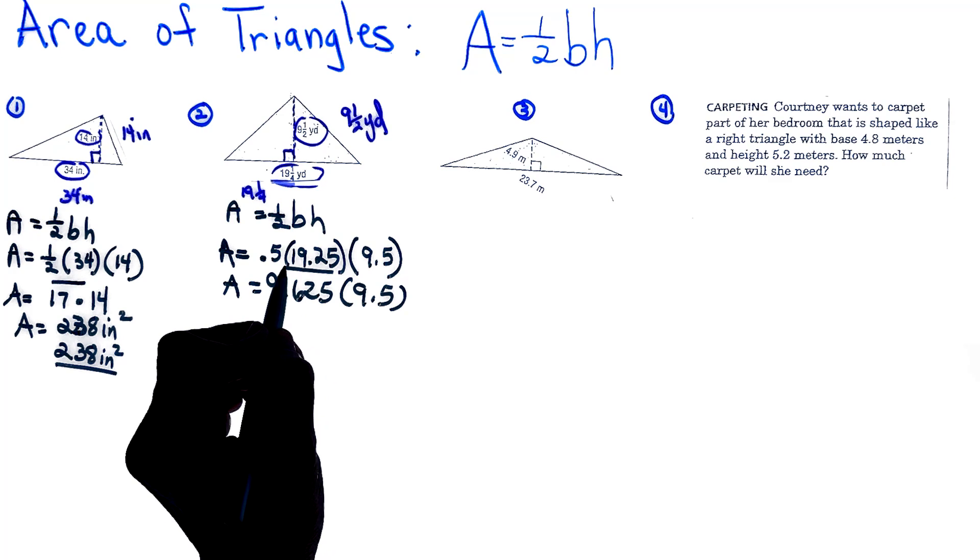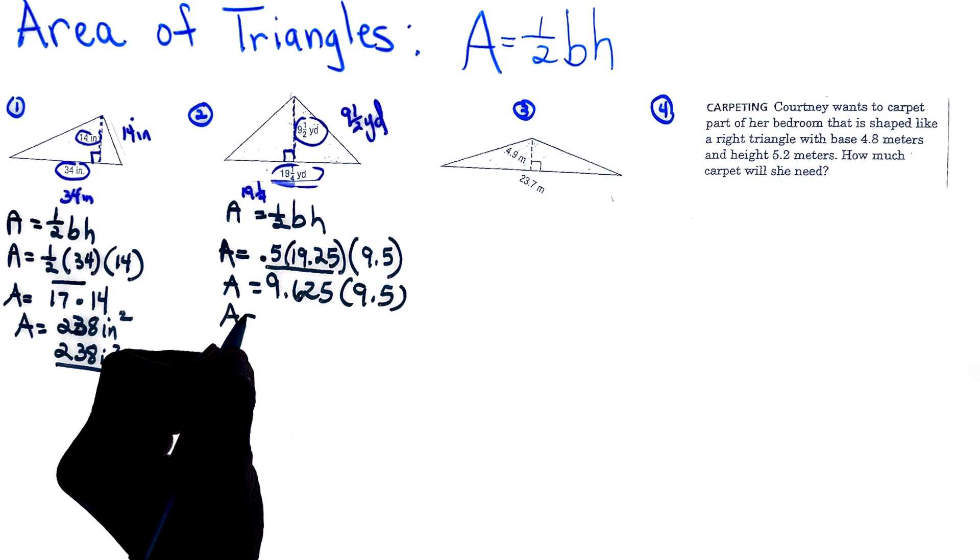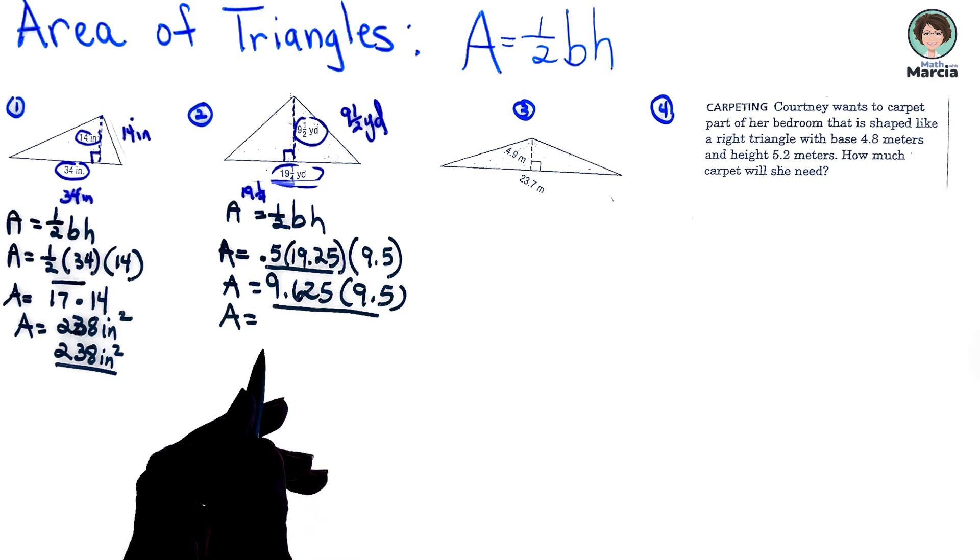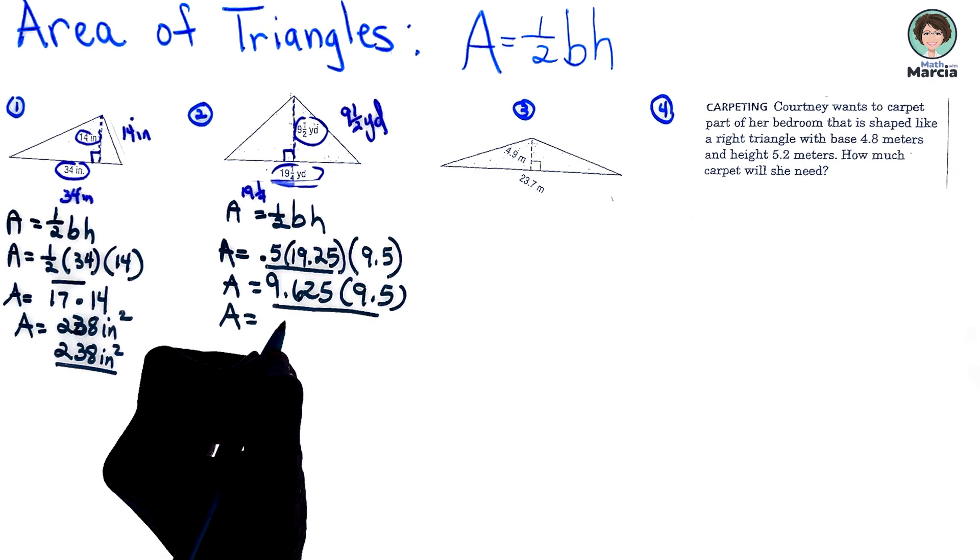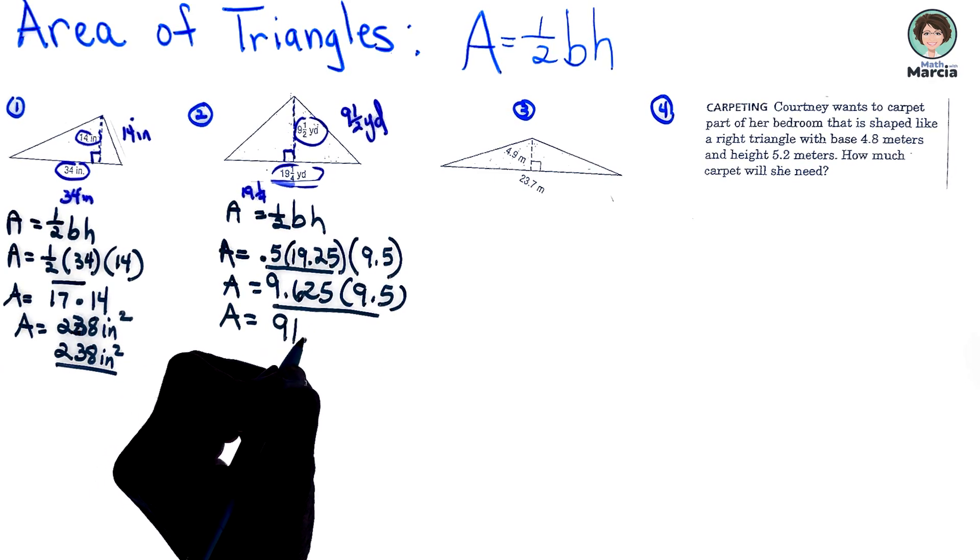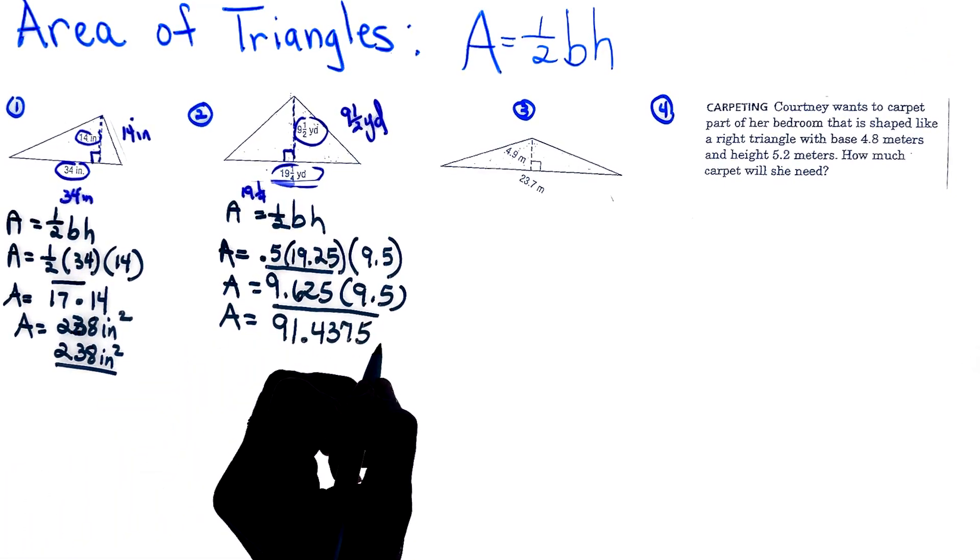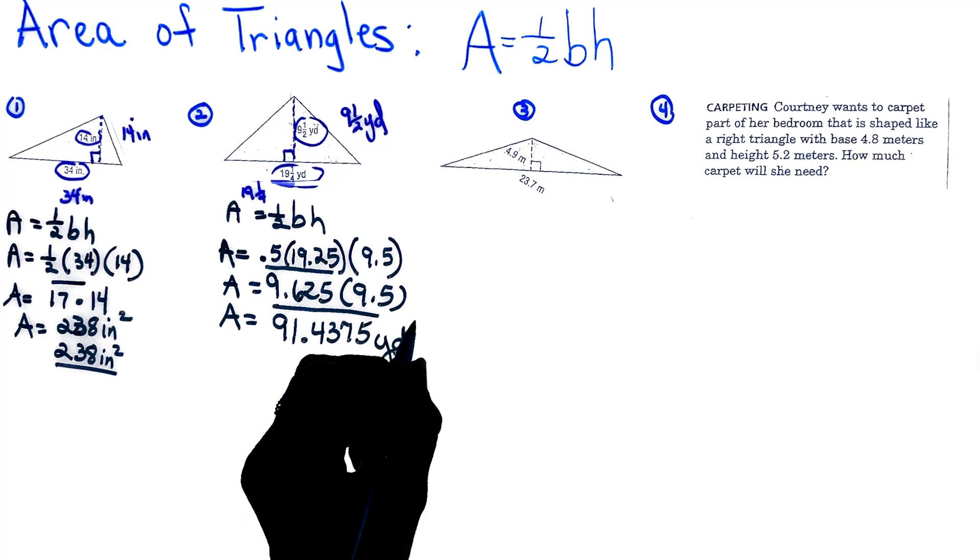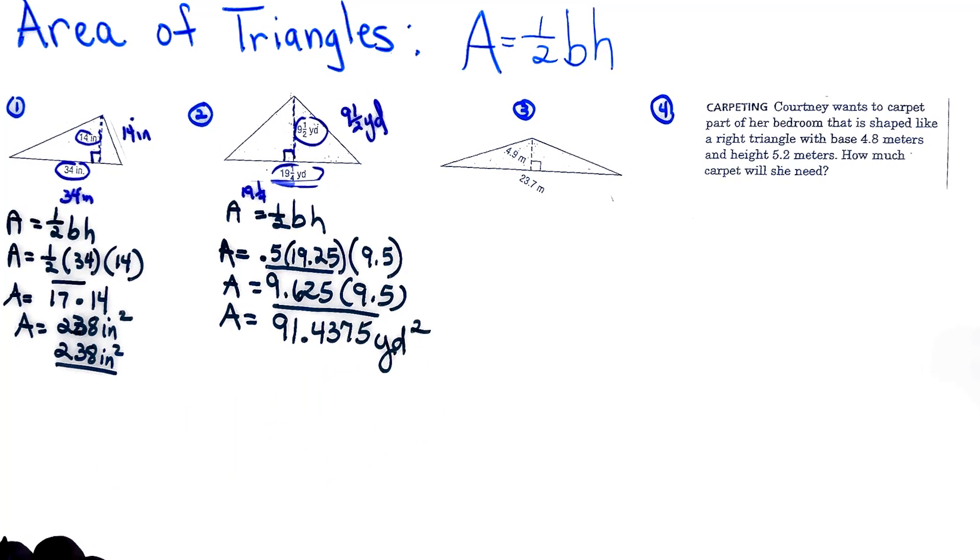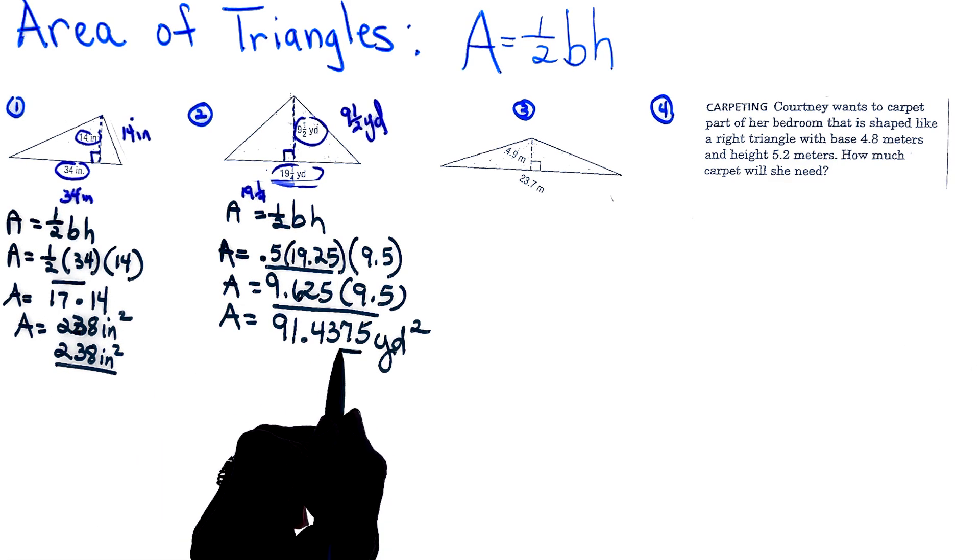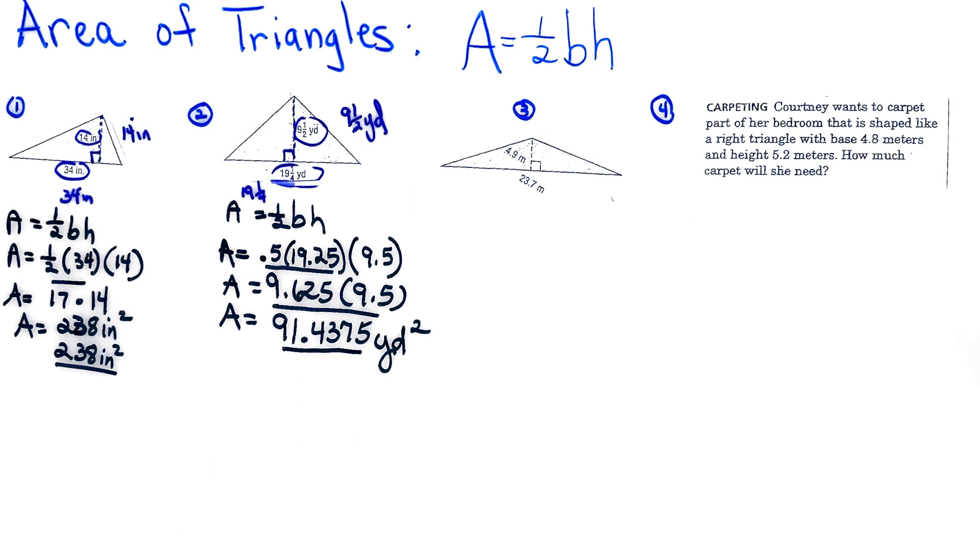I just multiplied those two together. Now to get my final answer, I am going to multiply these two and the area is 91.4375 and that is in yards squared. Now if a question might ask you to round it to the nearest tenth or the nearest hundredth, you need to pay attention, but that is actually the answer not rounded.